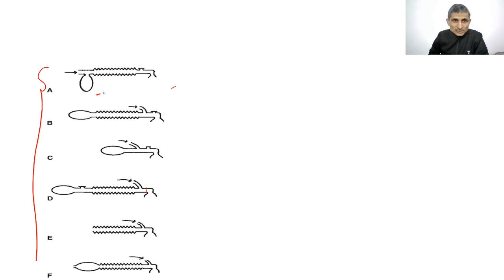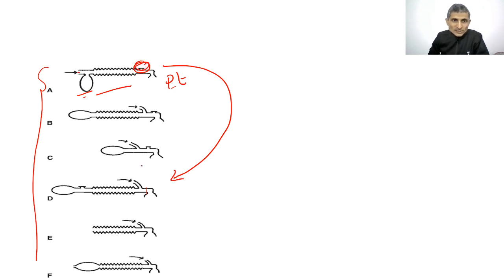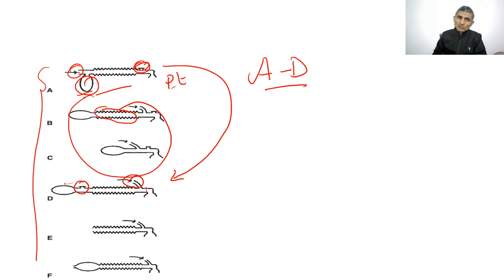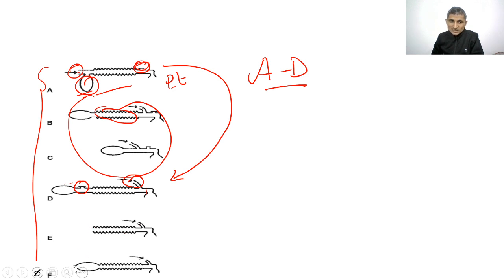In Mapleson A, the valve is toward the patient end. In Mapleson D, the valve has shifted to the other end and fresh gas flow has shifted to the patient side — opposite to Mapleson A. Mapleson B and C look similar, but B has corrugated tubing and is slightly larger while C is smaller. In Mapleson E, there is no bag; when a bag with a hole is attached, it becomes Mapleson F.